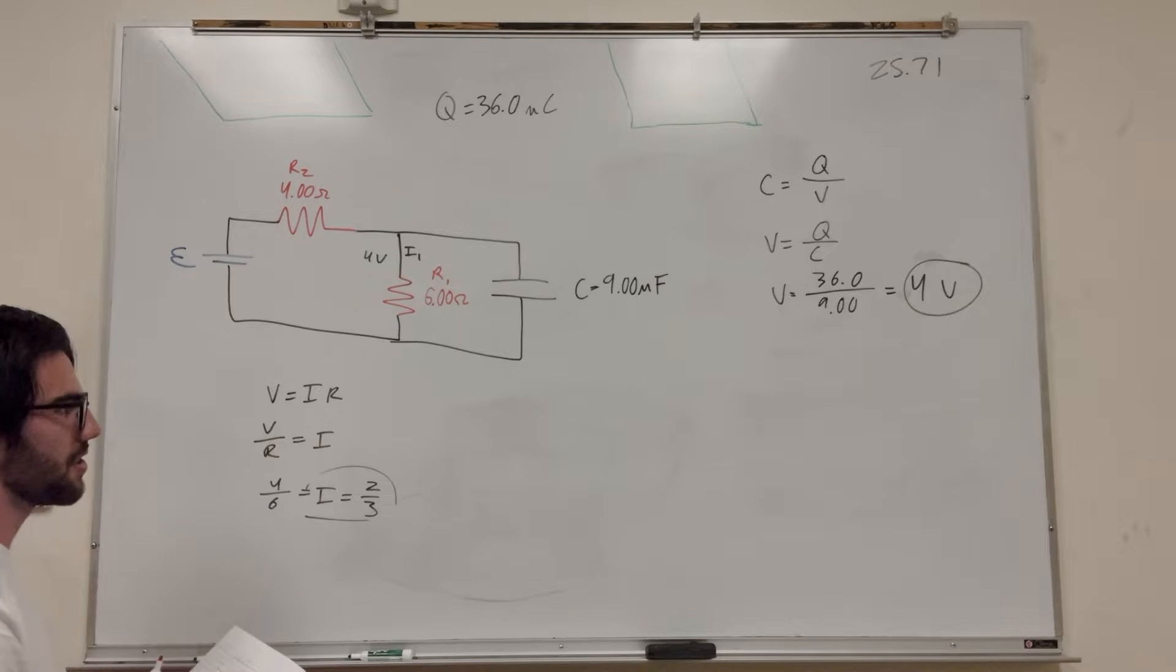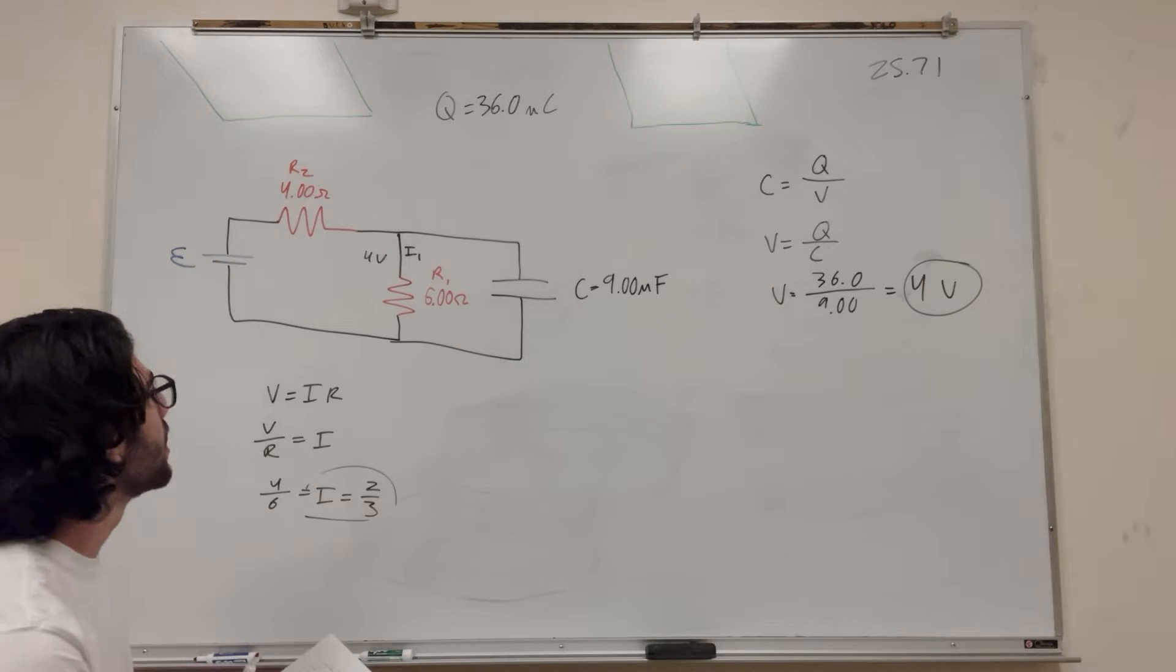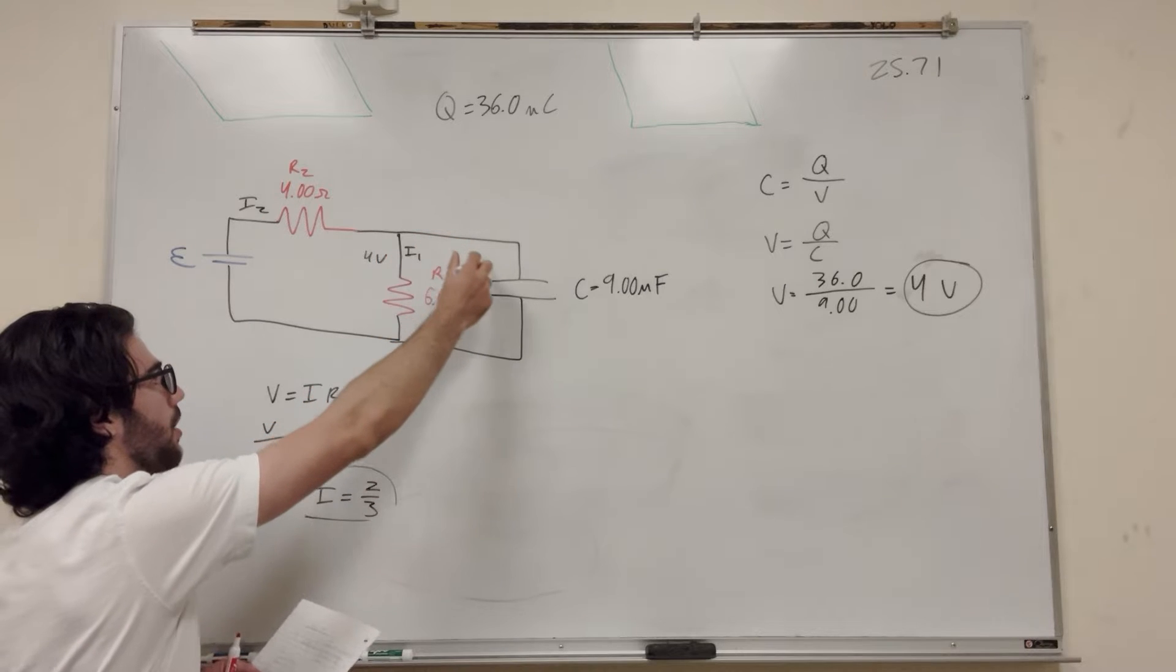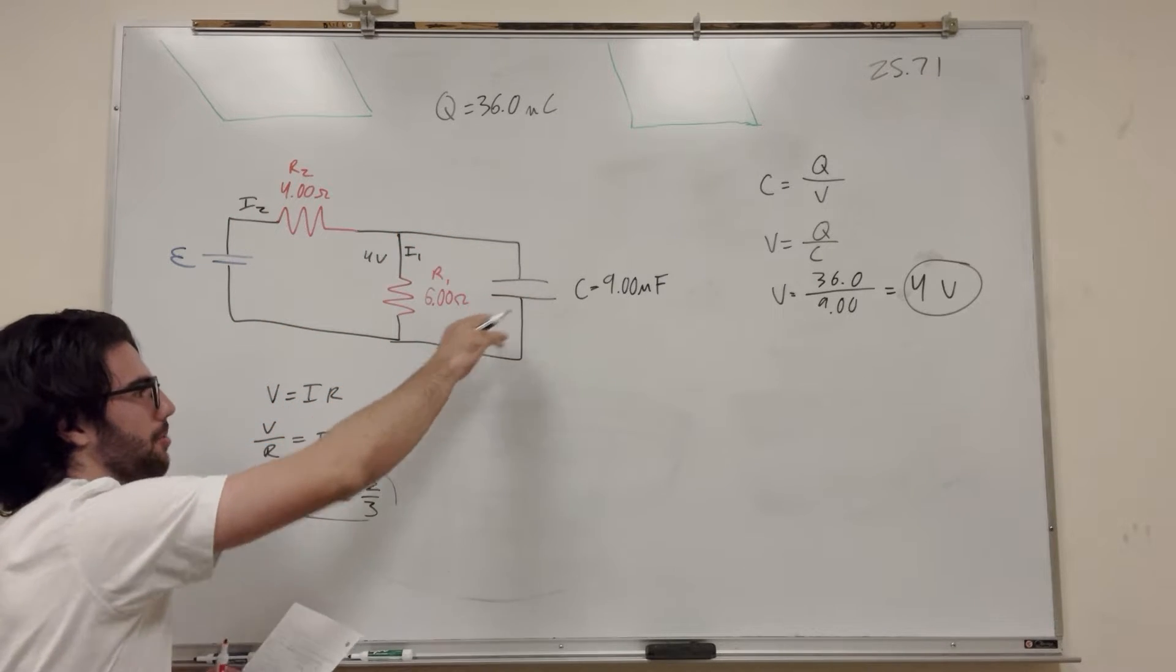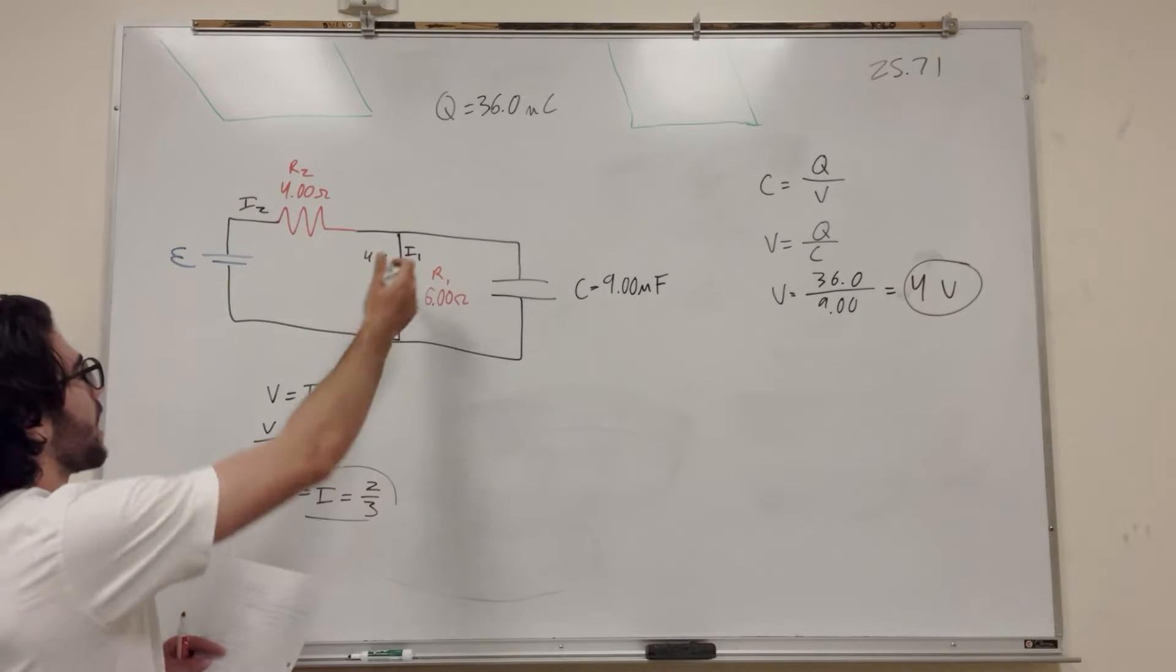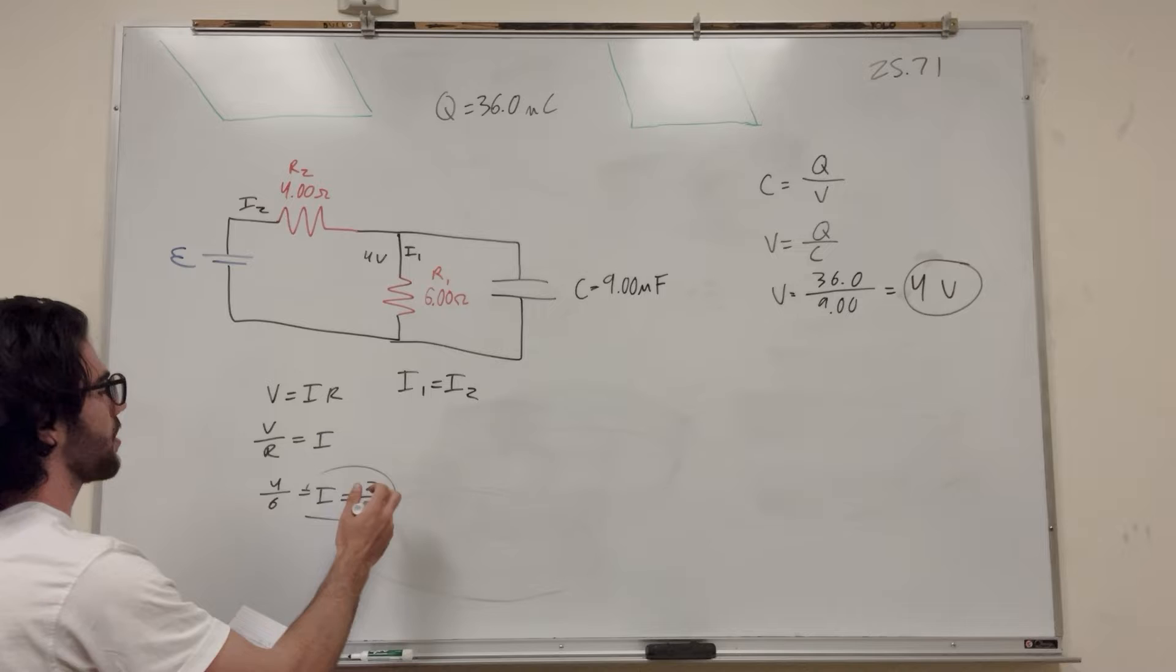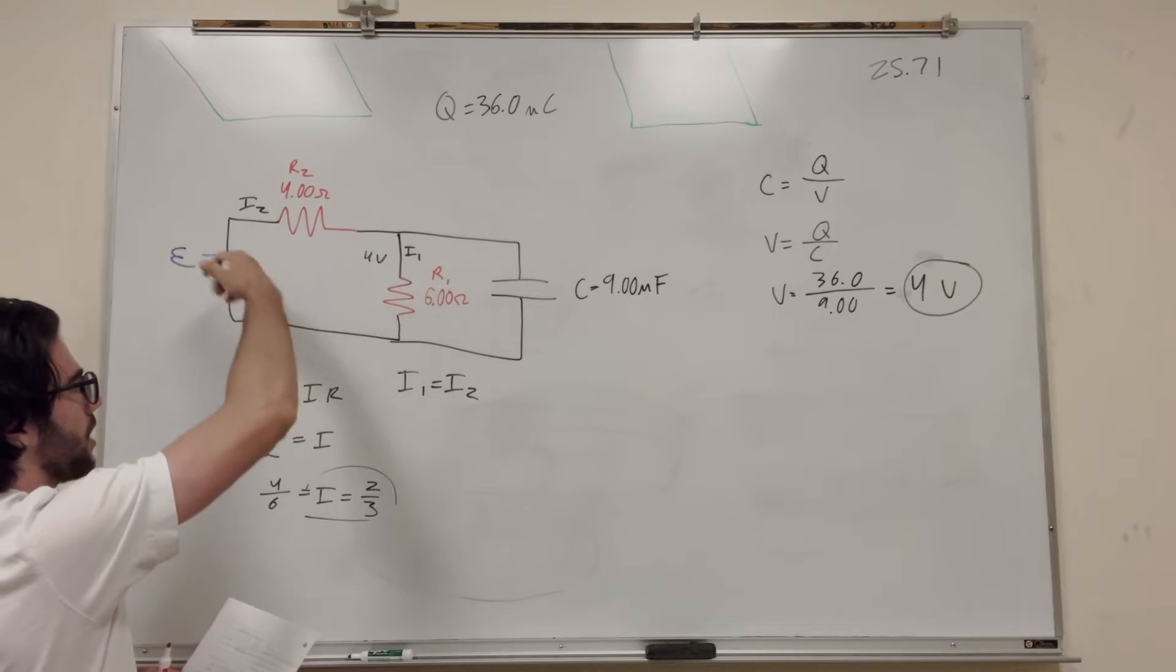So this is useful. Why is this useful? Well, if we label this I2, we know that when the capacitor is fully charged there's going to be very little flow going this way. All of the flow is basically going to be directed around here because this is just going to be an equilibrium. So we can say that I1 is equal to I2, two-thirds amps going around this entire circuit here.